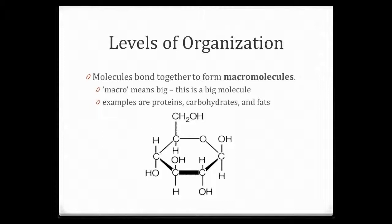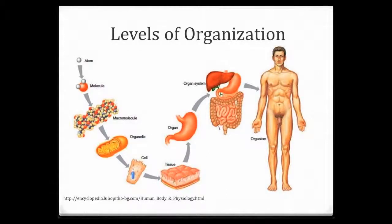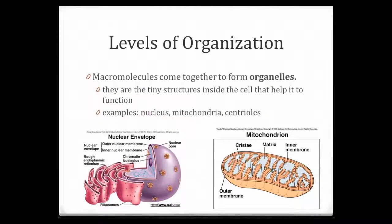So let's look at these levels of organization again. We start with the atom, the smallest structure we can study. We take atoms, combine them, and form a molecule — like this molecule of water: one oxygen and two hydrogens. We put molecules together and form macromolecules — remember, macro means big. If we take those macromolecules and put those together, we form organelles, which are the little structures within a cell that help it to function.